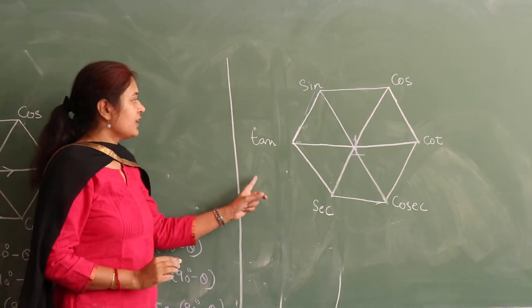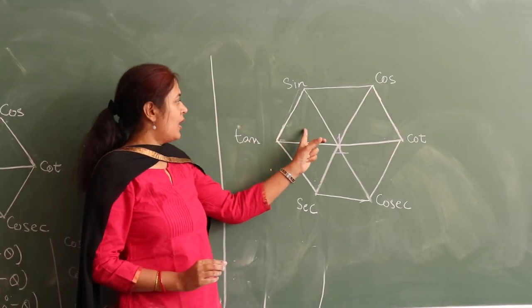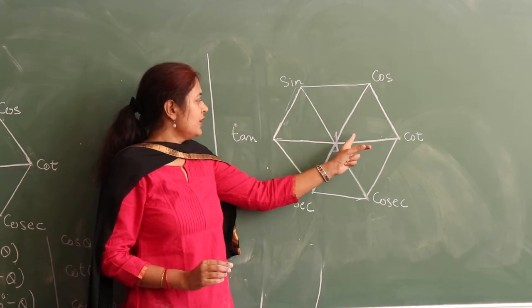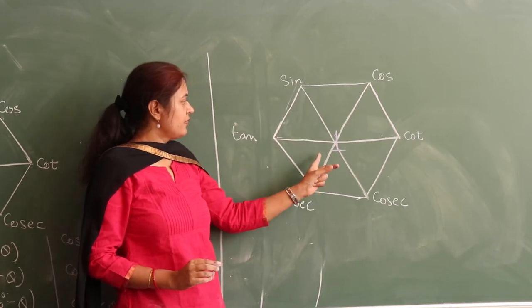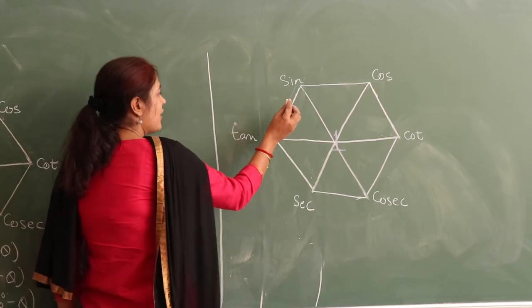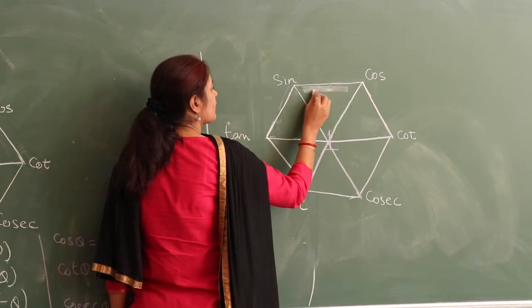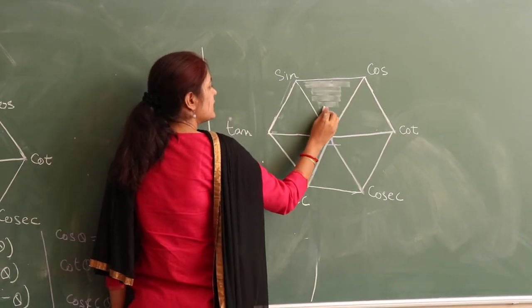Now we can see here, there are six triangles: one, two, three, four, five, and six.